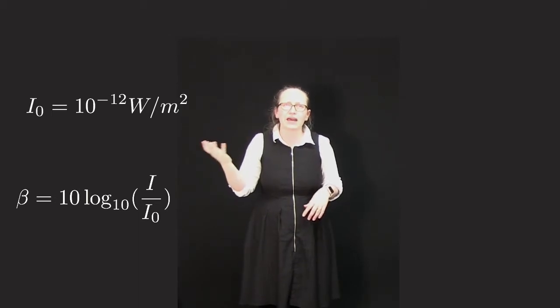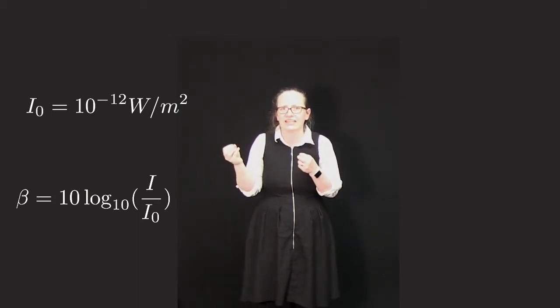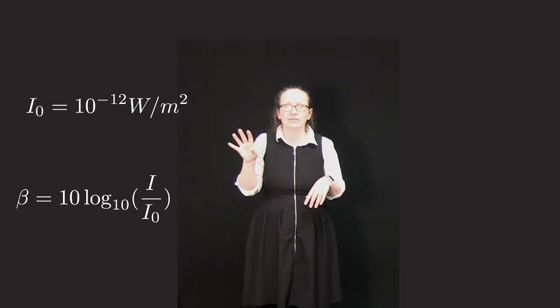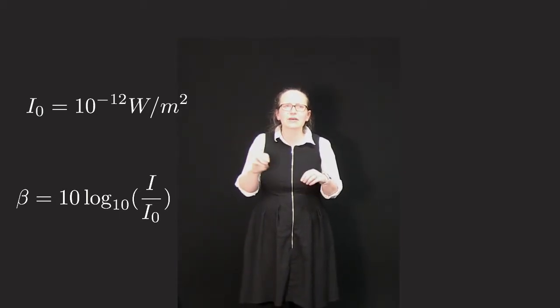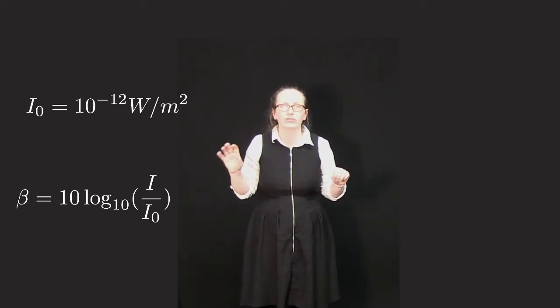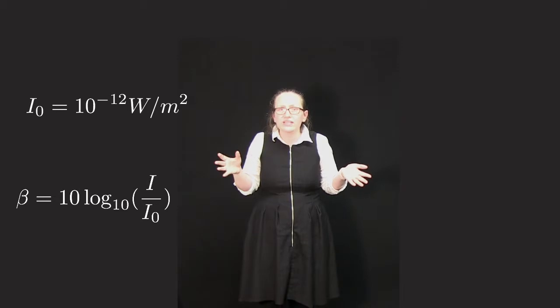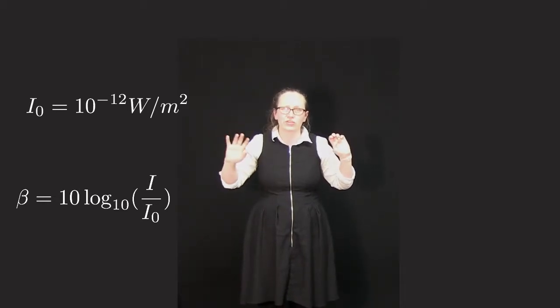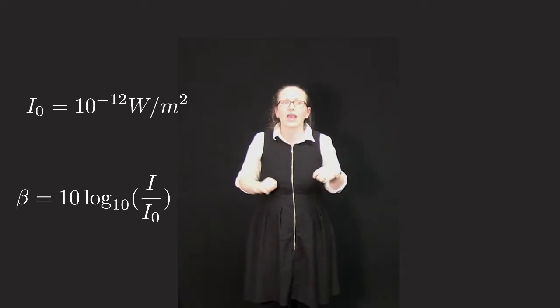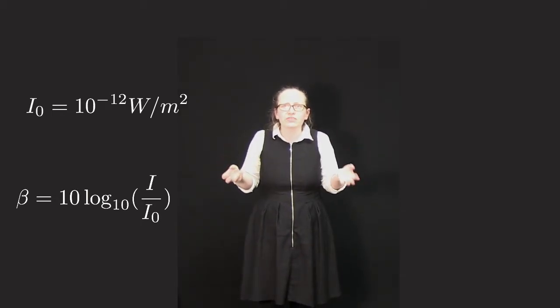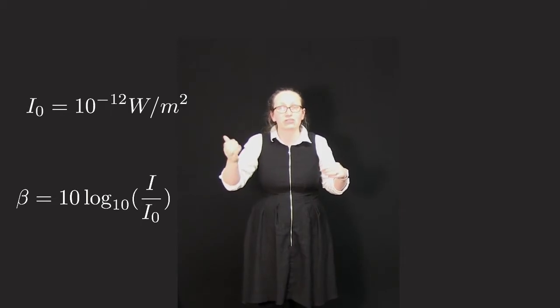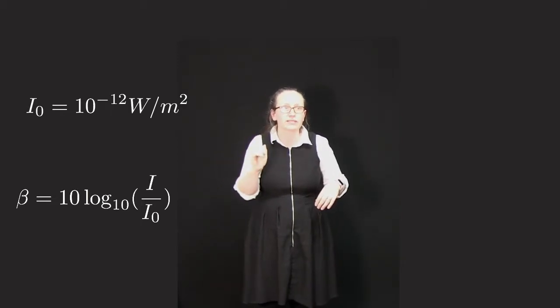10 decibels is about how loud rustling leaves sound. A whisper is about 30 decibels. 60 decibels is normal conversation. 80 decibels is loud traffic. 120 decibels is a loud rock concert and this is also known as the threshold of pain. 140 decibels is a jet aircraft taking off right over your head, so that's above the threshold of pain, so try not to experience that.